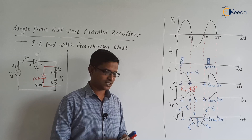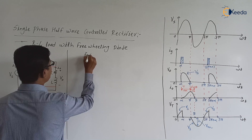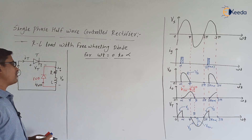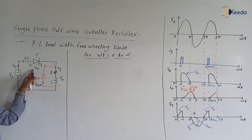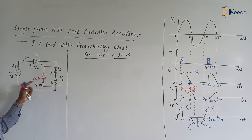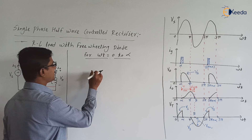Let us discuss the circuit operation. From ωt = 0 to α, Vs is positive, so the thyristor will be in forward bias mode, but since we have not applied the gate signal, the thyristor will be in the forward blocking mode. The freewheeling diode will also be in the off state, because the circuit is not completing.